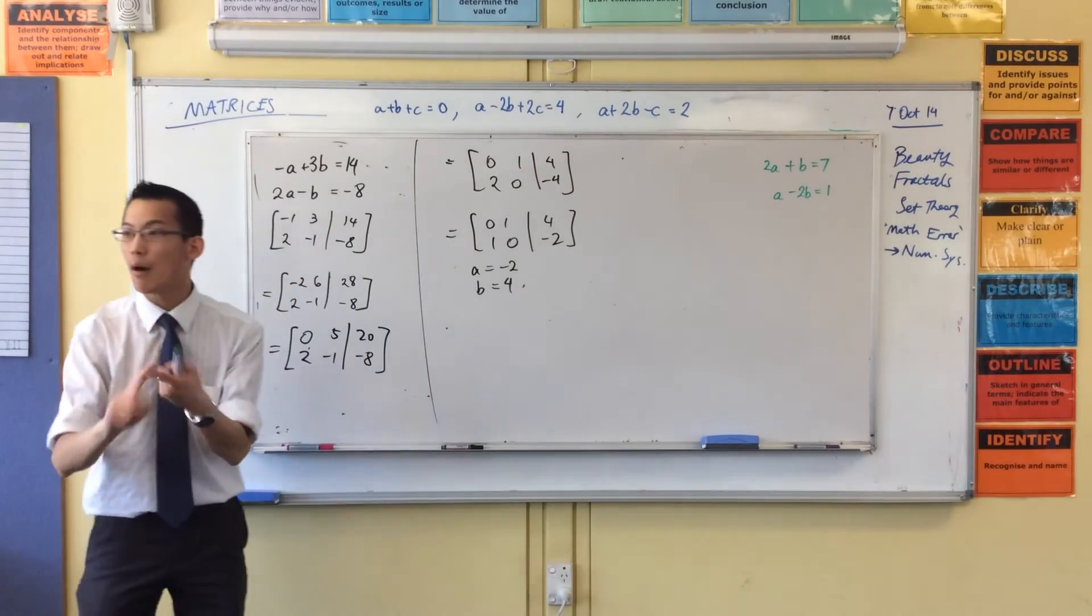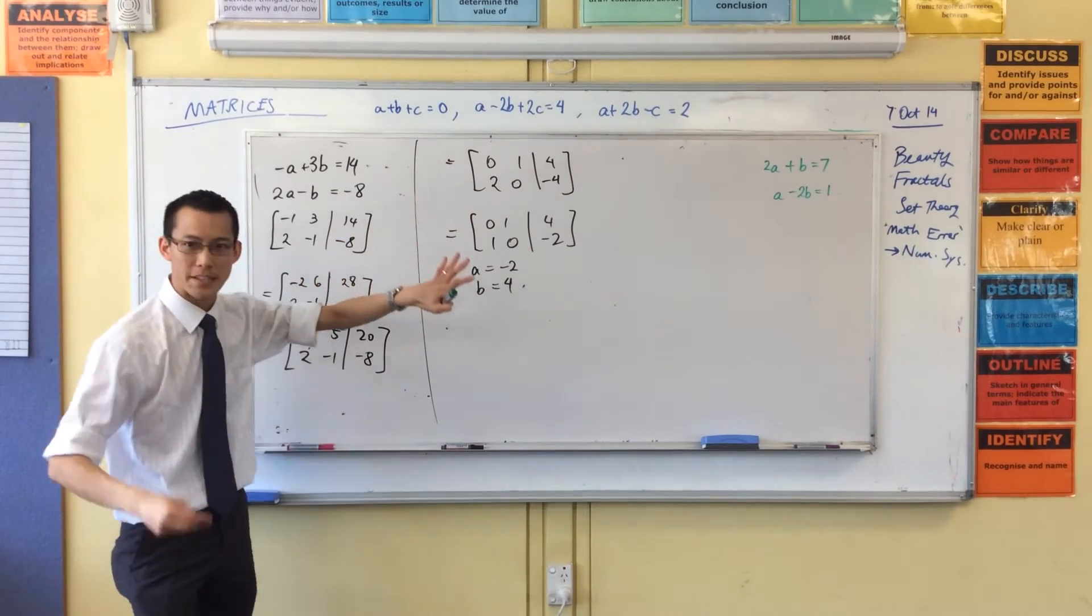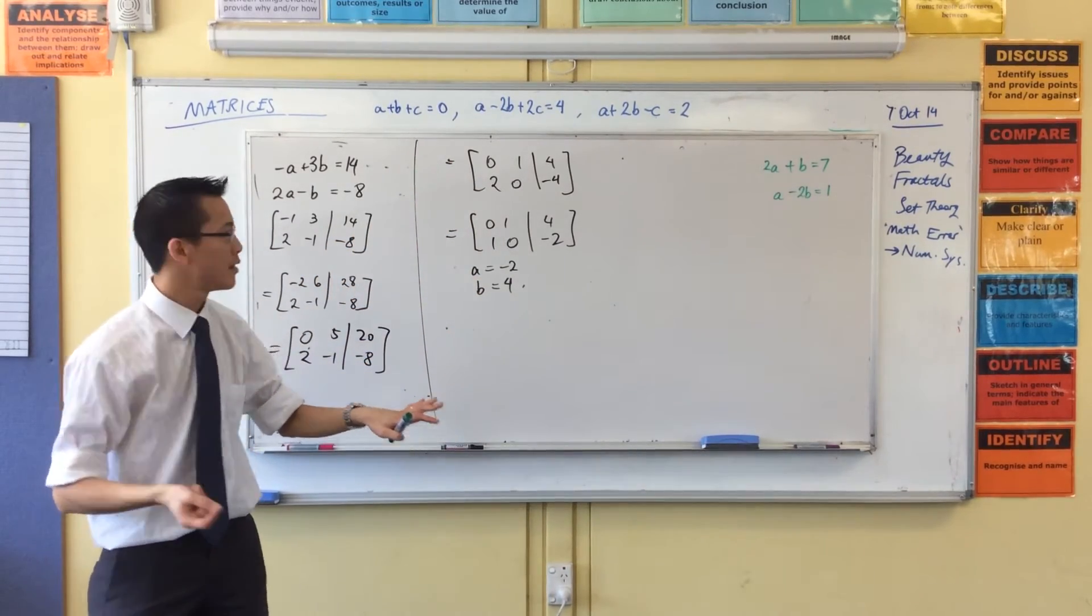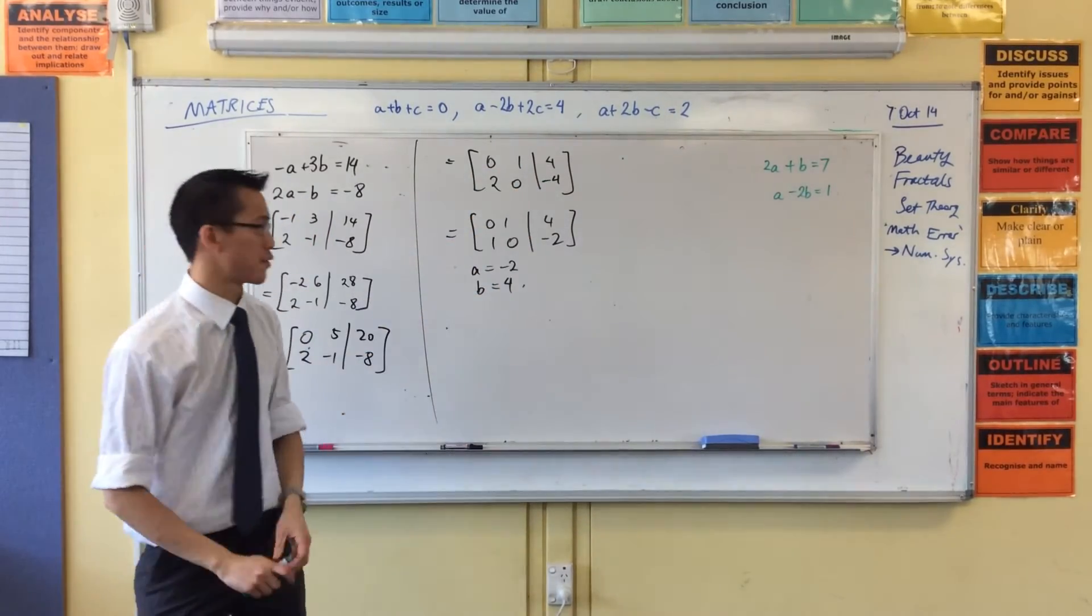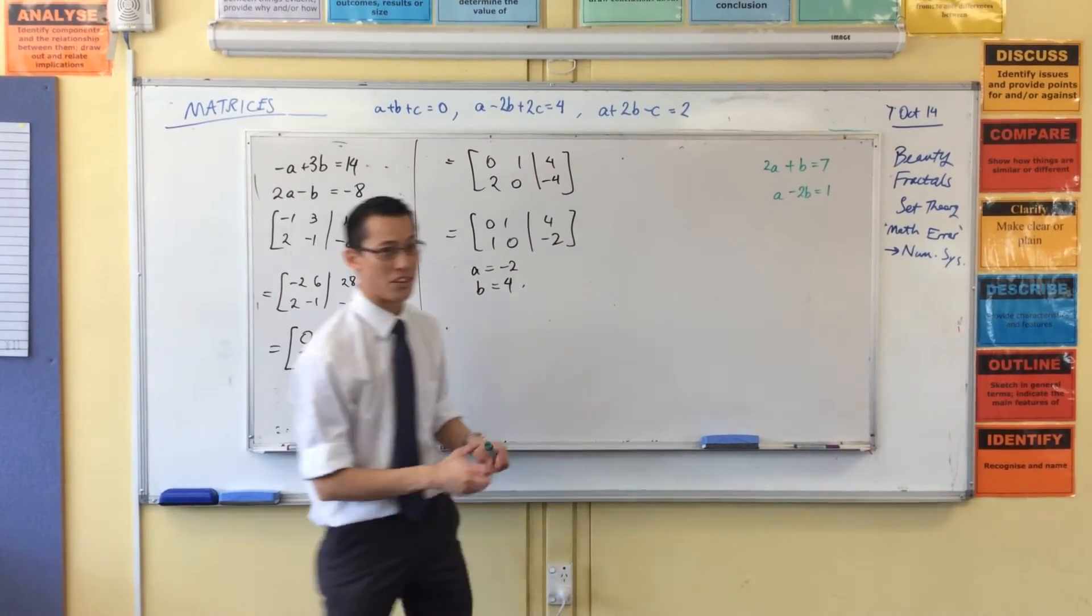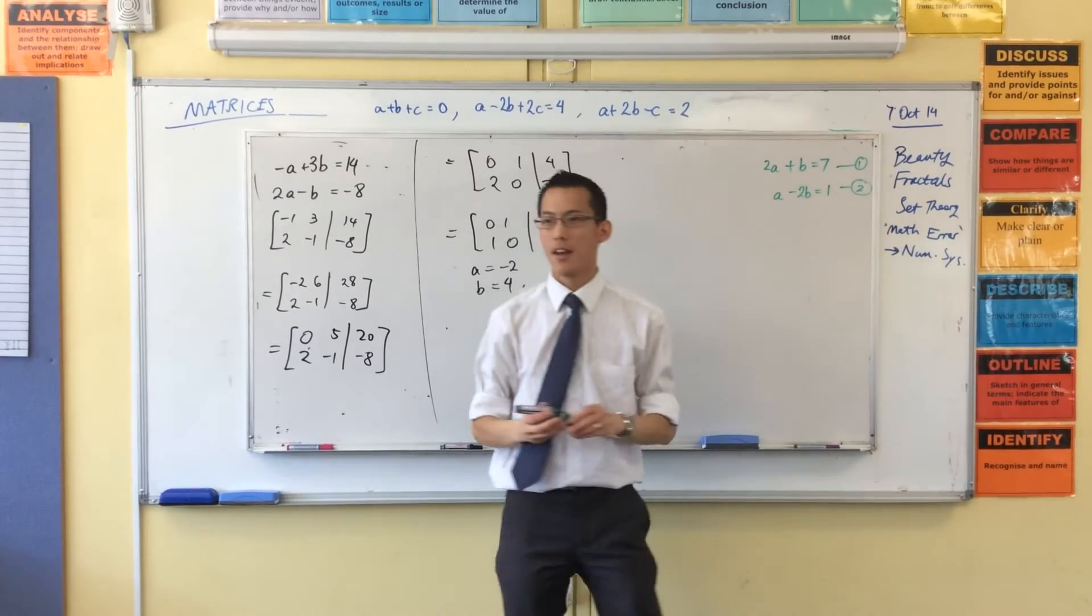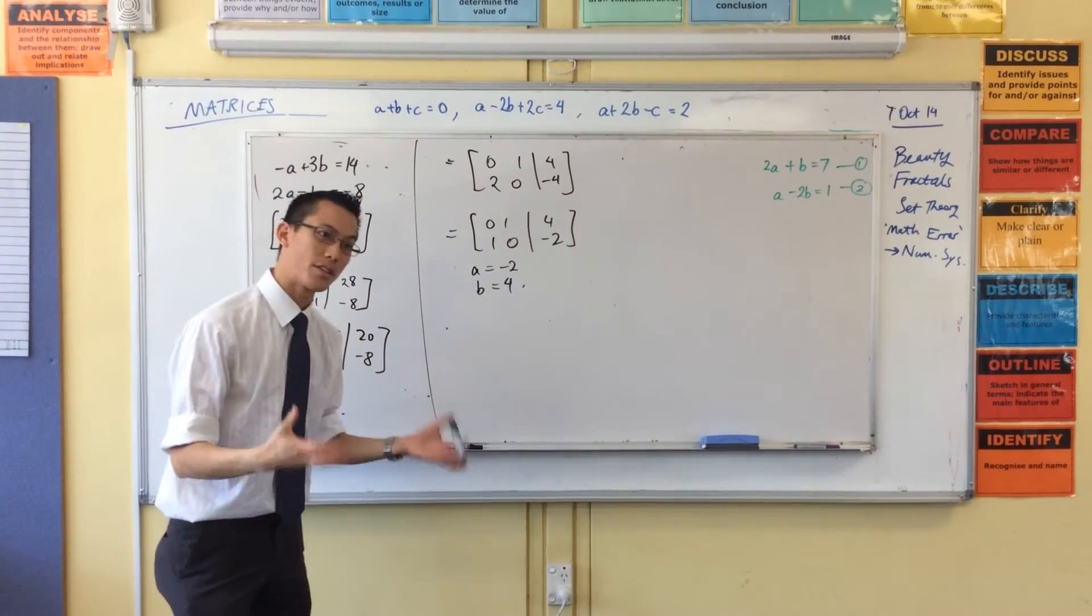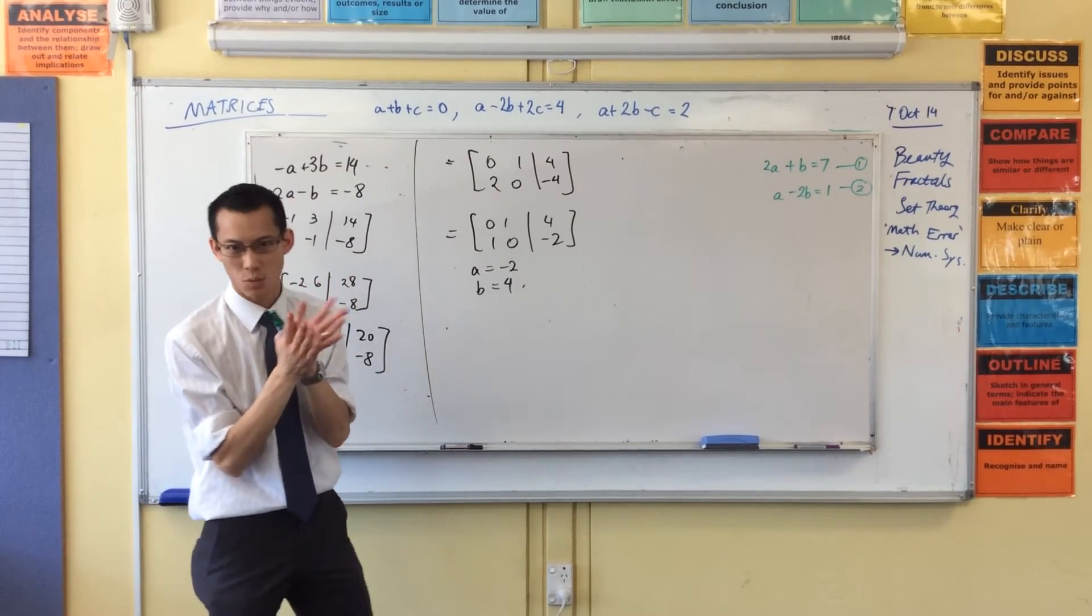So I already pointed out one advantage, namely that you can do the arithmetic faster. Let me show you another advantage. Have a look at what I've got in the right hand corner. Just put your pens down for a second. I've just made up this system of equations. It's really easy. But I want to show you a common problem that solving simultaneous equations has, particularly when you first learn them. So for instance, what might you do to this?